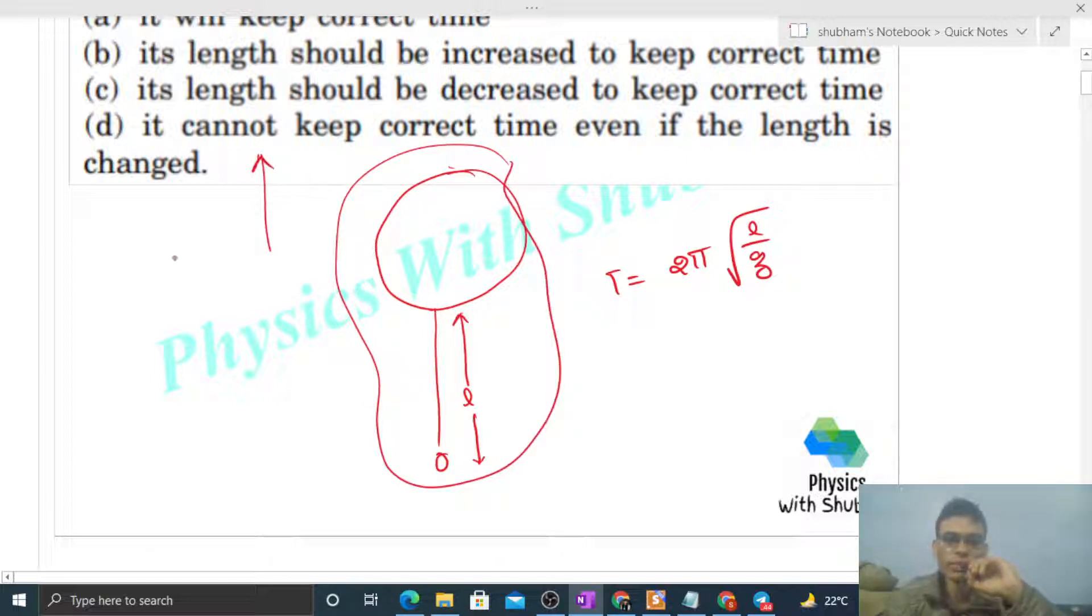The value of g will decrease at high altitudes. So if the value of g decreases, then the time period value will increase. It means this clock will now move slower.